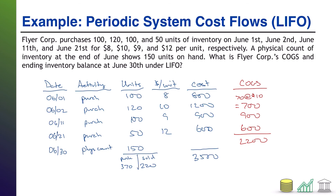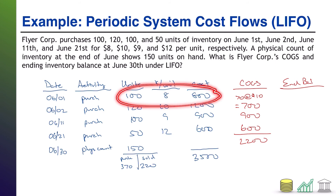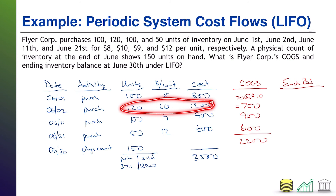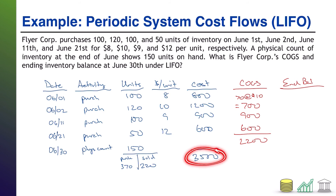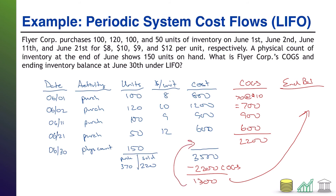For ending inventory under LIFO, it's a little less straightforward than FIFO. You don't have two clean batches left — you have the first batch of $800, plus 50 remaining units from the second batch at $10 each = $500, for a total of $1,300. Alternatively, $3,500 available for sale minus $2,200 cost of goods sold leaves $1,300. Either approach gives you the same ending inventory of $1,300 under LIFO.